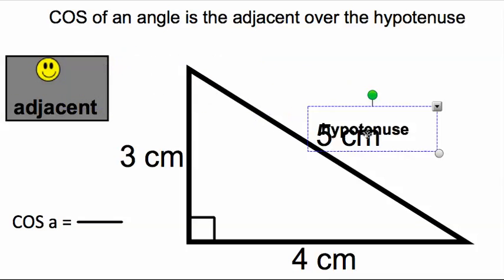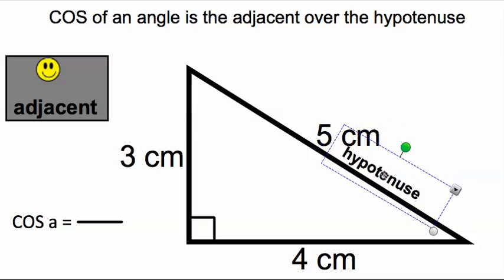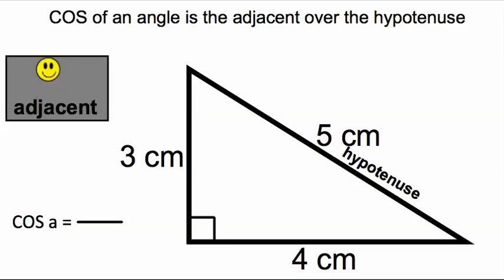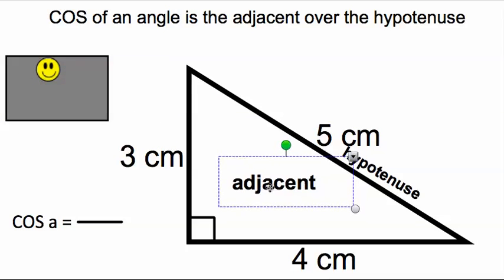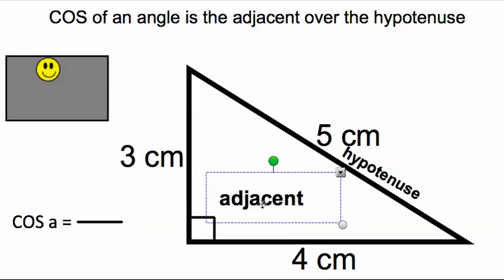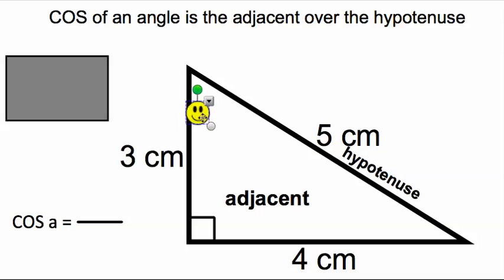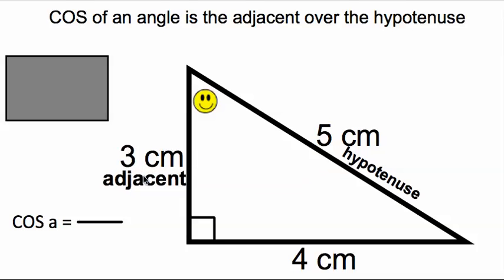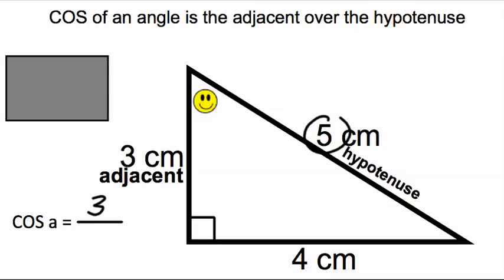Let's get a handle on what's adjacent and what the hypotenuse is in a given right triangle. The hypotenuse is always the side furthest from the right angle — so that would be this side right over here. The adjacent side depends on what angle we're talking about. We never talk about the right angle itself. If the angle we're looking for is up here, then the adjacent side is right here, and so the cosine of A would be 3 over 5 — here's the adjacent, and here's the hypotenuse.